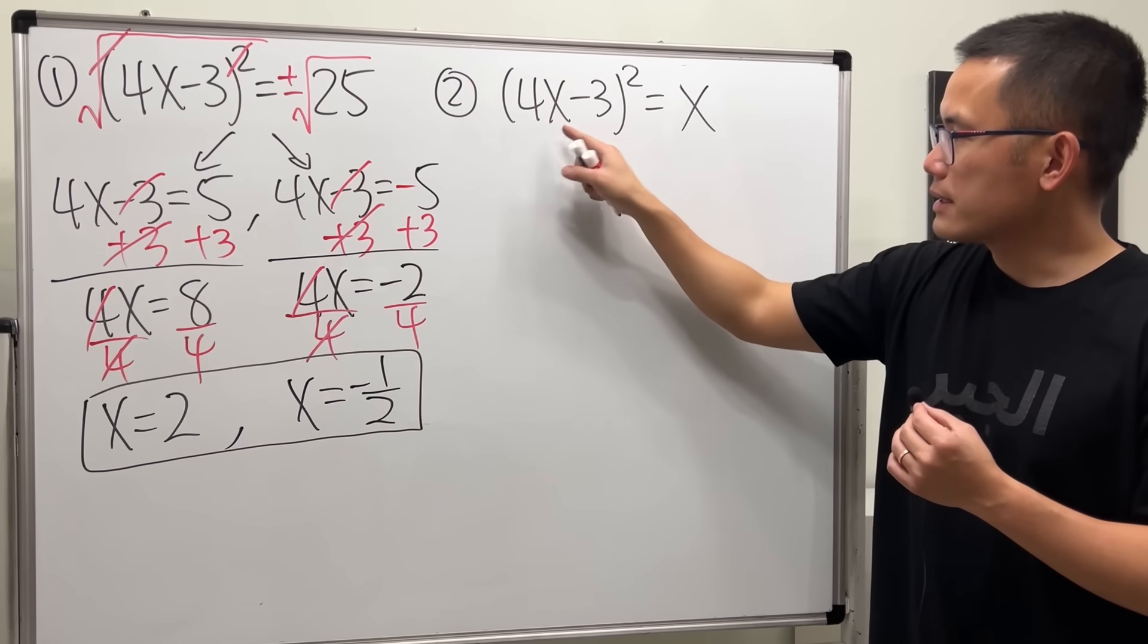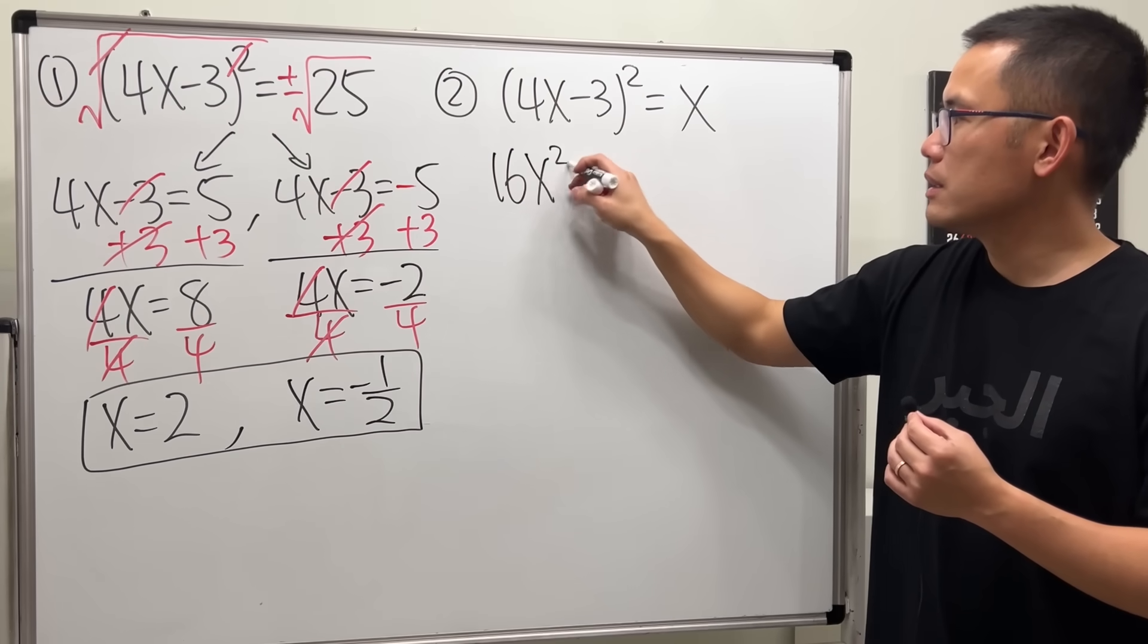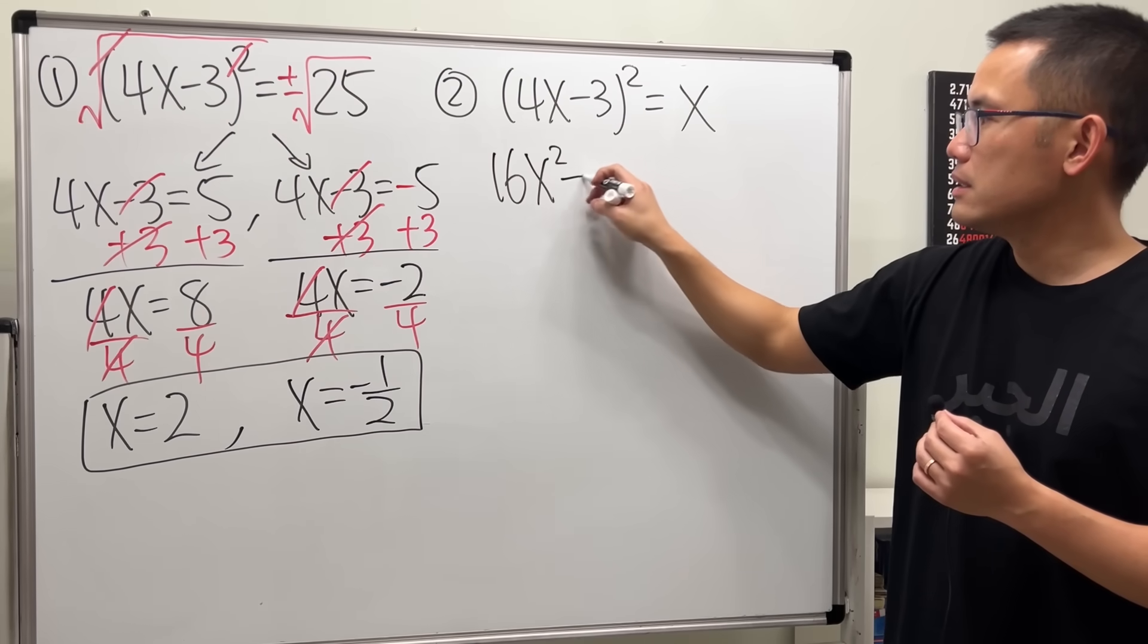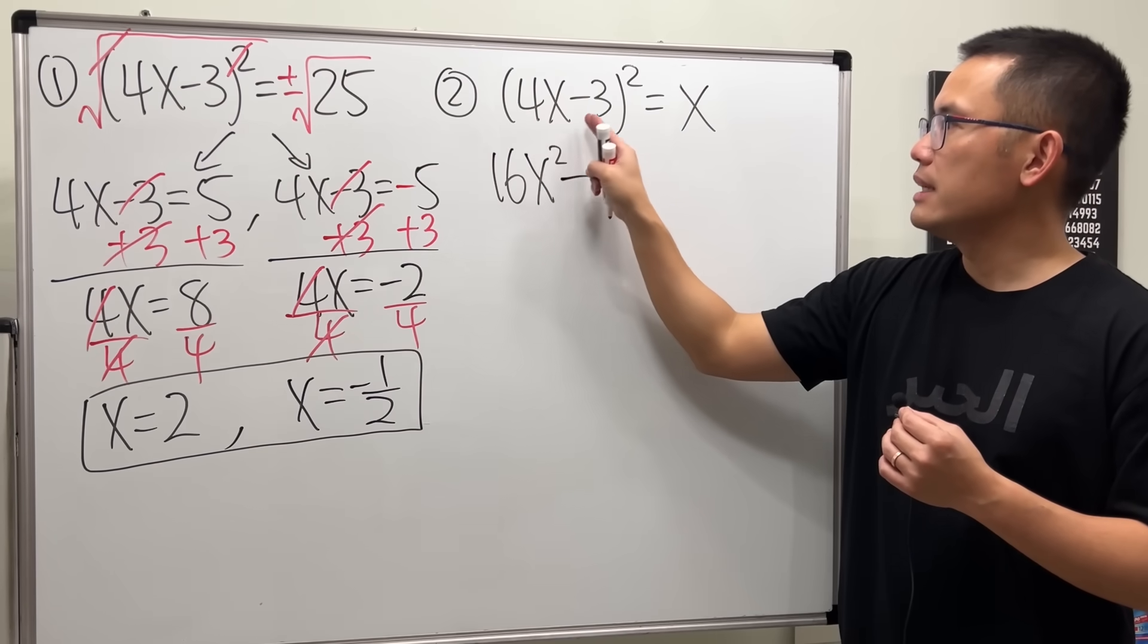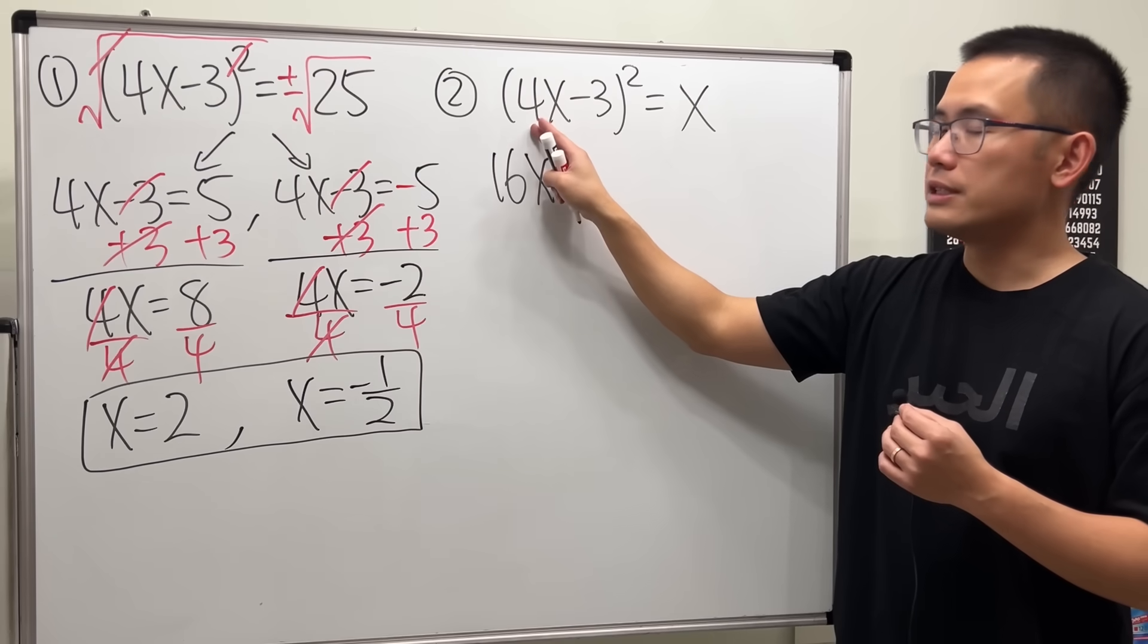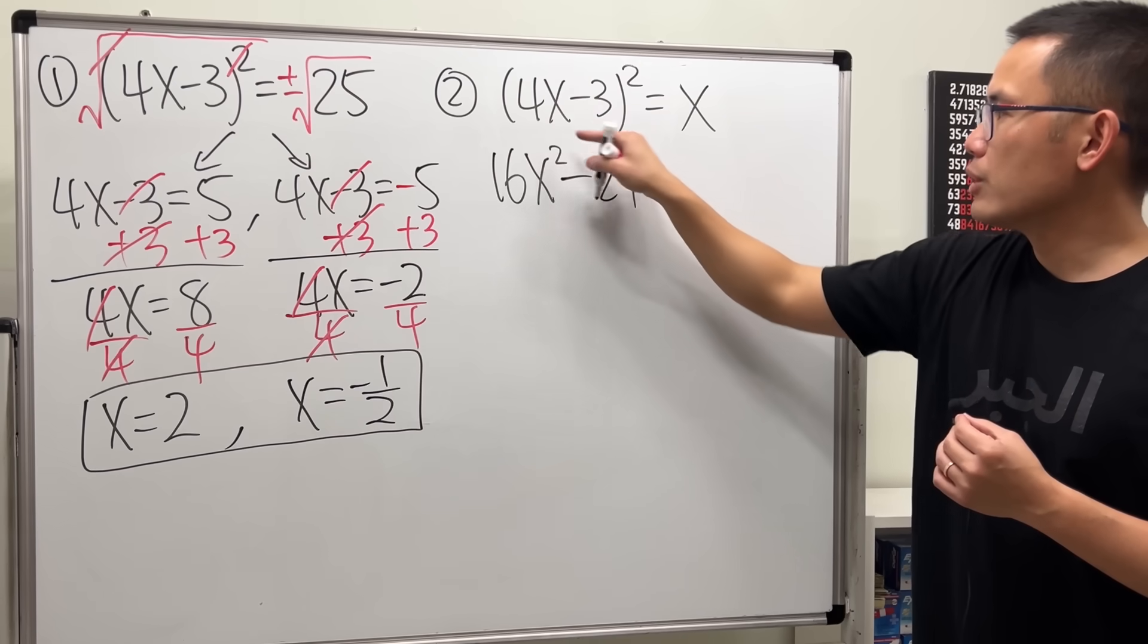So, we will square the 4x. 4 squared is 16. And then x squared. And then this is a minus. And then we take 2 times 4x and 3. 2 times 4 is 8. Times 3 is 24.